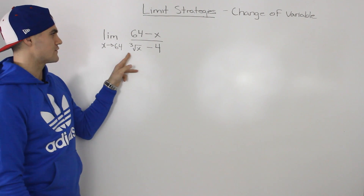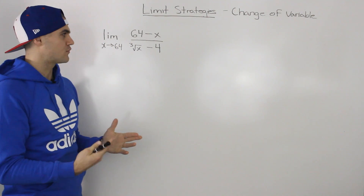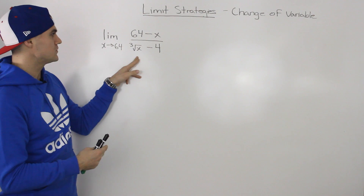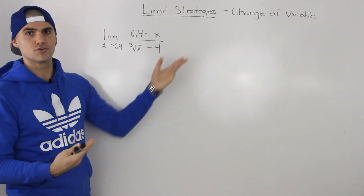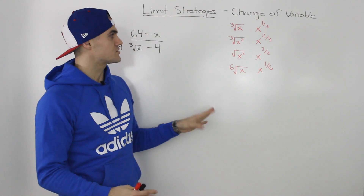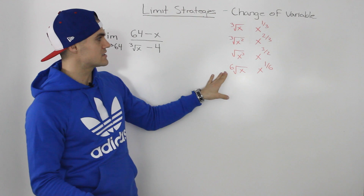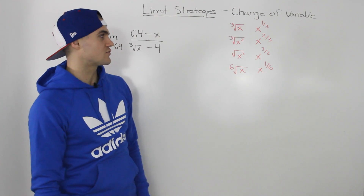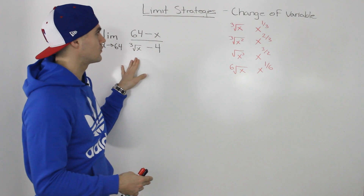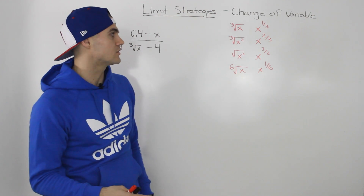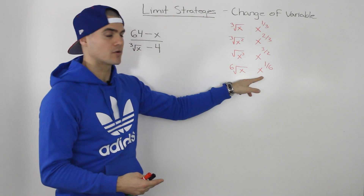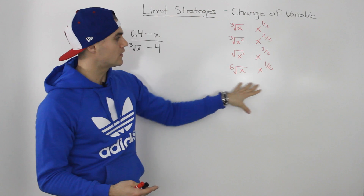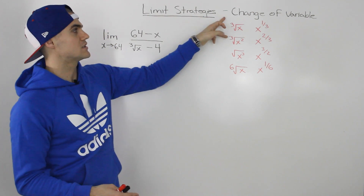How do we deal with this third root of X? We've dealt with normal radicals before — for example the square root of X — where we simply rationalize and solve the limit. But what do we do with a third root? This is where the change of variable strategy comes in. More generally, whenever you see a radical like this or an X raised to a rational exponent, you'll be using the change of variable strategy. The first step is always to convert any radicals into rational exponents.